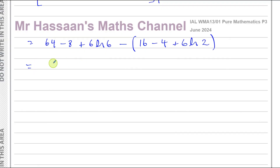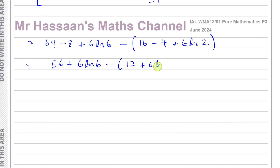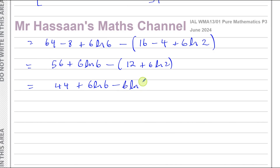Simplifying: 64 minus 8 is 56, so we have 56 plus 6·ln 6, minus the bracket containing 16 minus 4 which is 12, plus 6·ln 2. So we have 56 minus 12, which is 44, plus 6·ln 6 minus 6·ln 2.